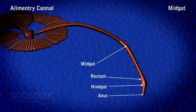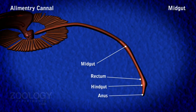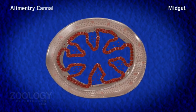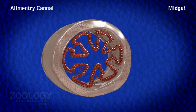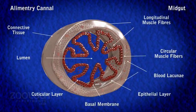Intestine, also known as the midgut, is a long, narrow, and straight tube running backward along the median line between the extensor and flexor muscles up to the sixth abdominal segment. Its lumen is wide at the anterior end but reduced posteriorly due to the presence of longitudinal folds.